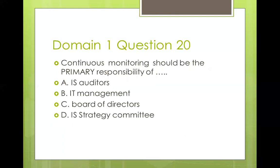Question twenty: continuous monitoring should be the primary responsibility of IS auditors, IT management, board of directors, or IS strategy committee. Take note — continuous monitoring is the responsibility of IT management, while continuous auditing is the responsibility of internal audit or IS auditors. So the answer is B — IT management. The essence of reviewing these questions is to give you an idea of the kind of questions that appear in domain one and how to approach them, reinforcing concepts discussed in the domain one training video.